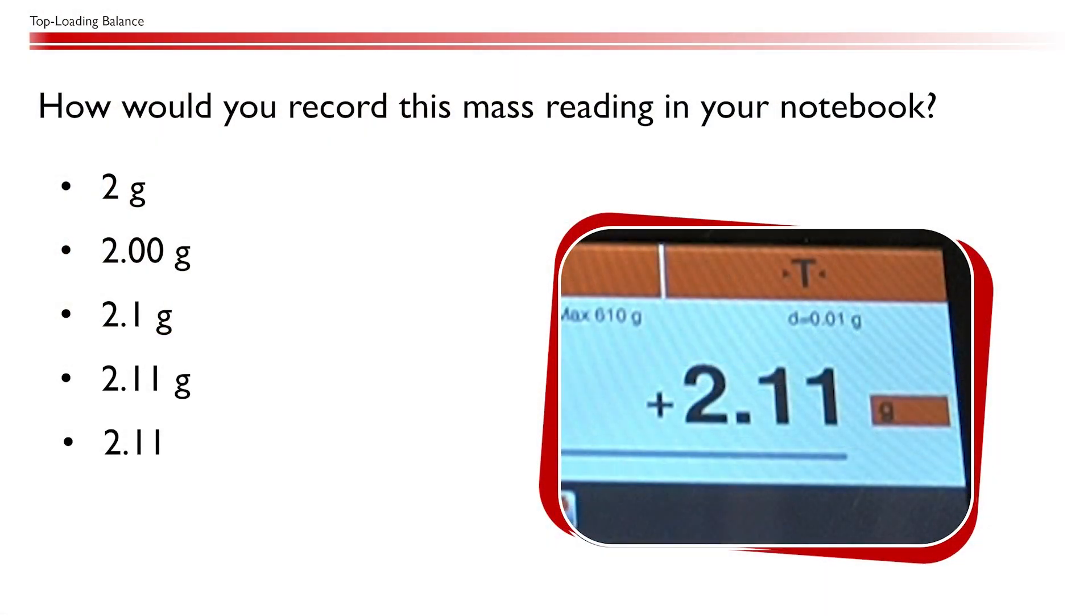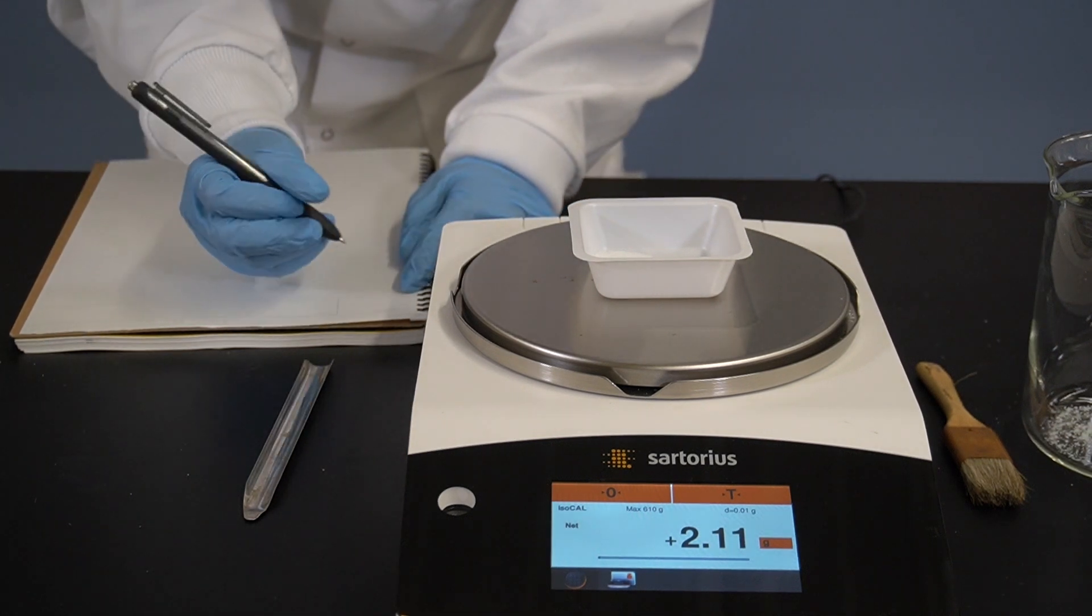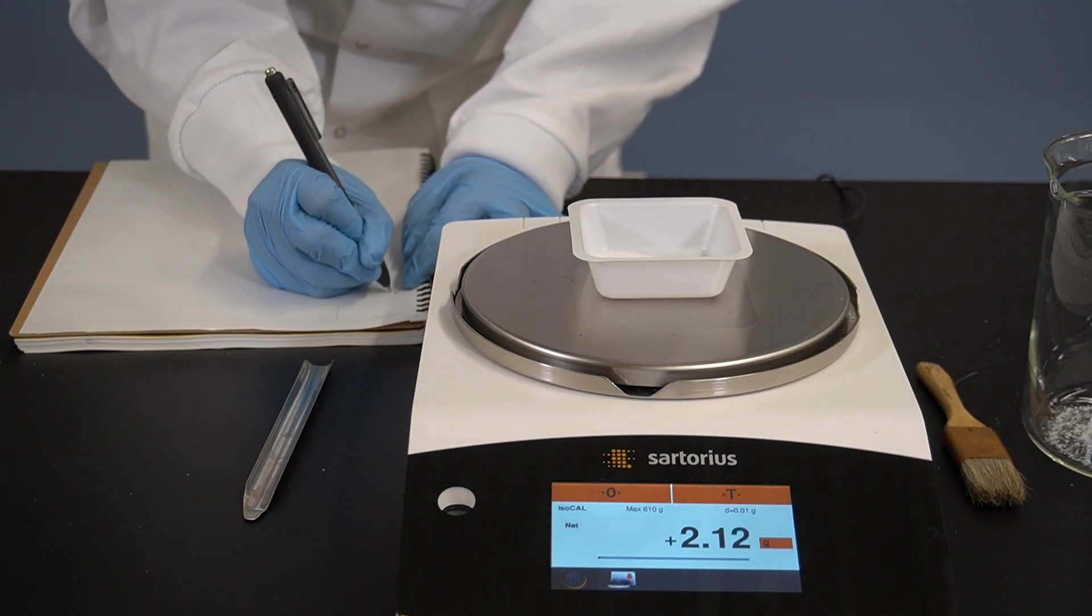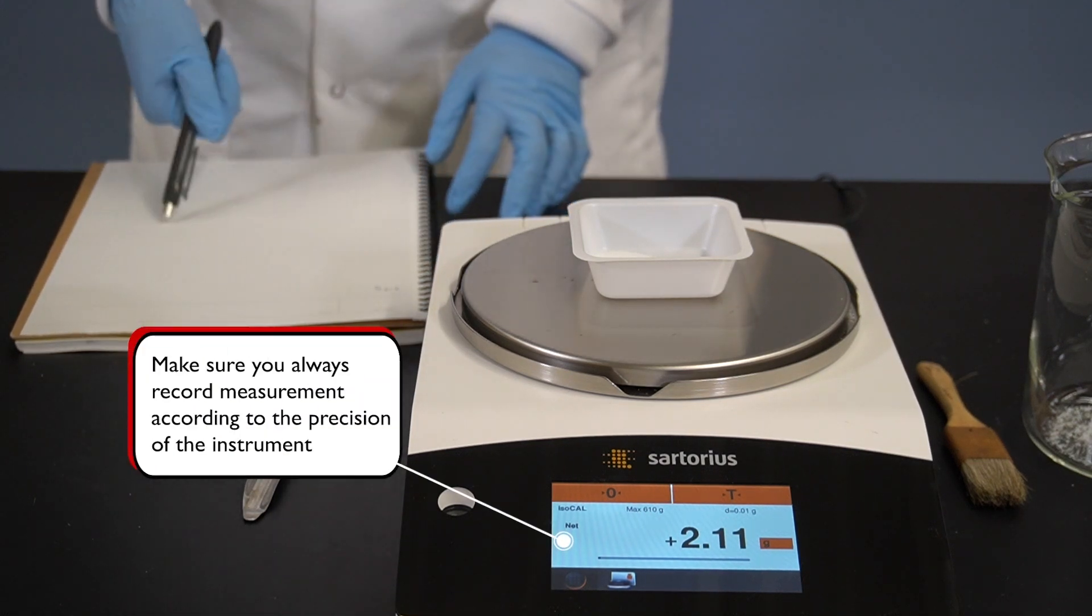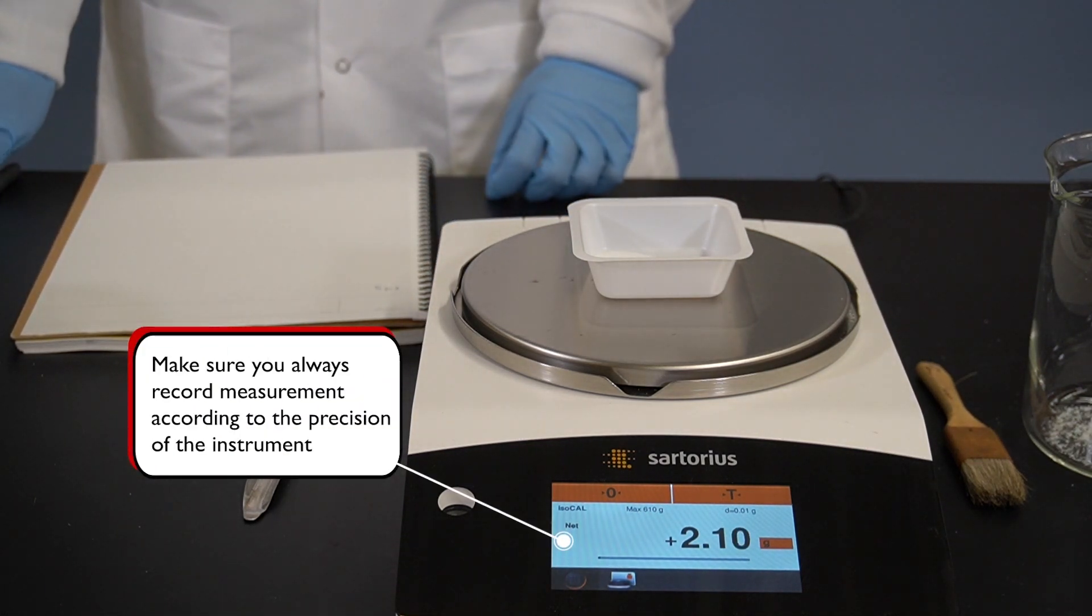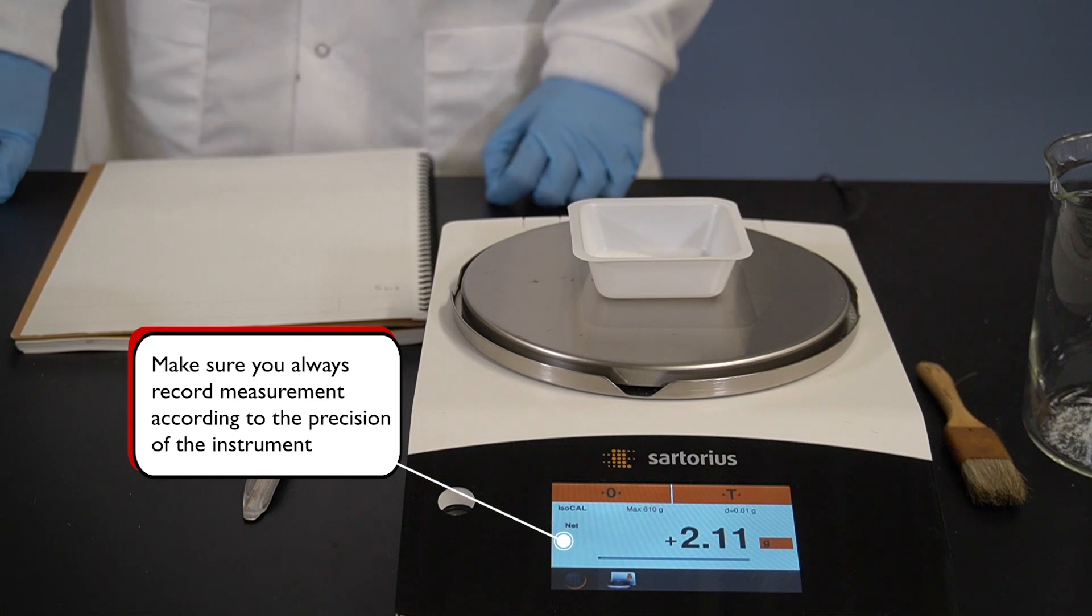How would you record this mass reading in your notebook? The correct option would be 2.11 grams, since the top loading balance measures up to two decimal places in precision, and including the units of a measurement is a must for any lab measurements.